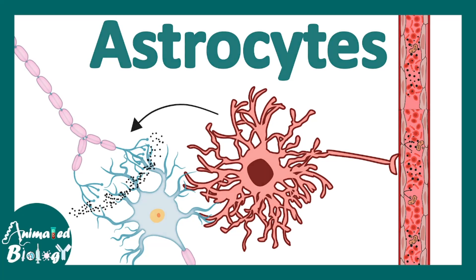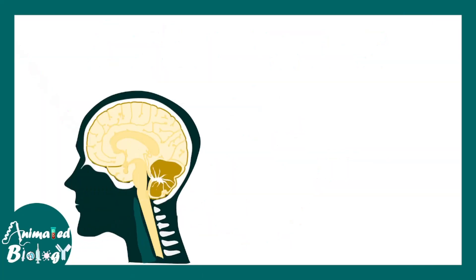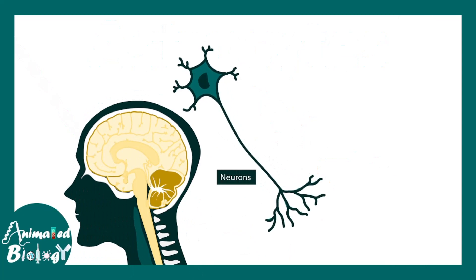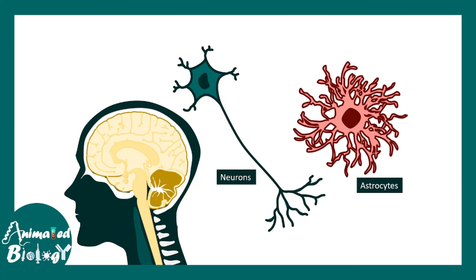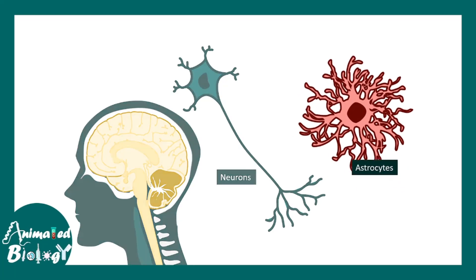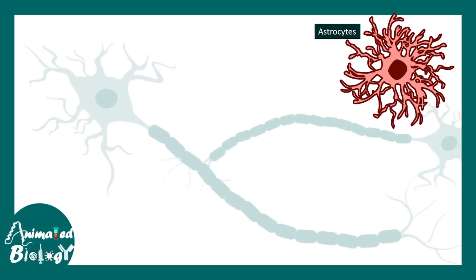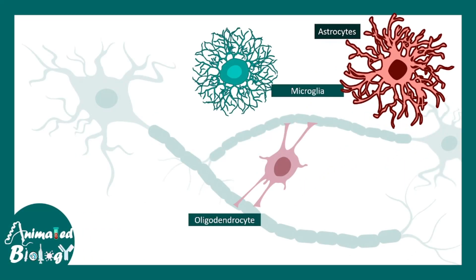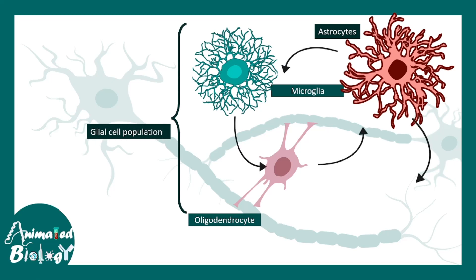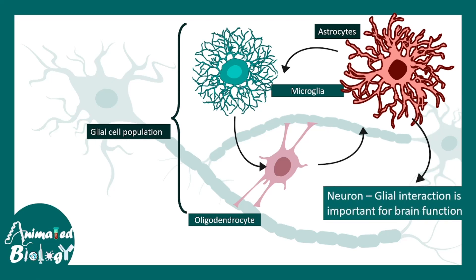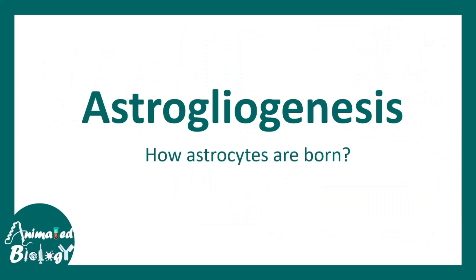In this video we'll be talking about astrocytes. When we think about our brain, we have neuronal cells, and alongside the neuronal cells we have other cell types known as glia. Astrocyte is one type of glia. Alongside astrocytes there are many other glial cell types in the brain, such as microglia, oligodendrocytes, and each of these cell types have their defined role. They interact with each other, and that's what is important for brain function.